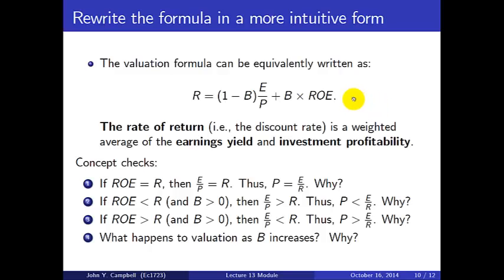Let's think about this formula more carefully. If ROE equals R, then we have R on both the left and right sides. In that case, E over P equals R, or equivalently P equals E over R. Why? The firm has invested to the point where its return on new investment exactly equals its cost of capital. So the cash flow it's generating, as a fraction of price, is exactly equal to its cost of capital — the price is current earnings discounted at rate R.